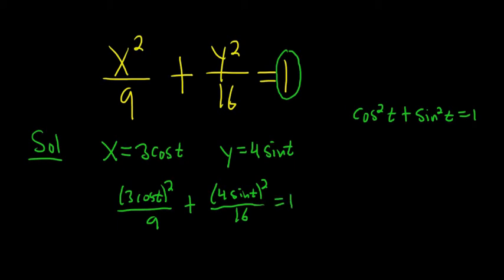And then you see that this becomes 9 cosine squared over 9 plus 16 sine squared over 16. These cancel, and you get cosine squared plus sine squared, so it's equal to 1.